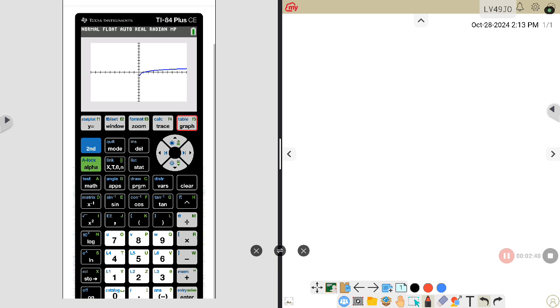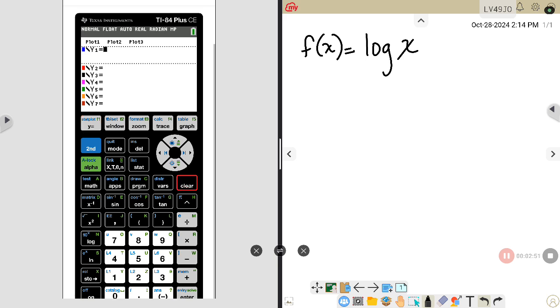All right, looking at another example. We have f of x equals log of x. So when I go to my y equals to put this one in, you'll notice that it doesn't have the base like that last one did.